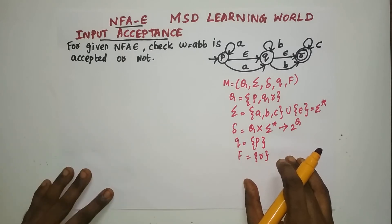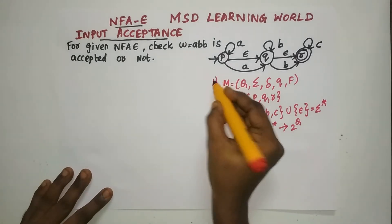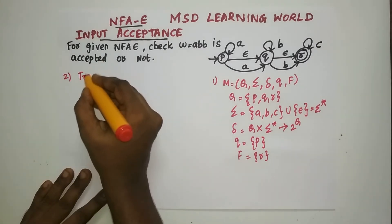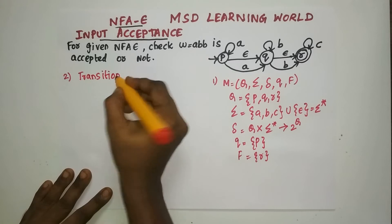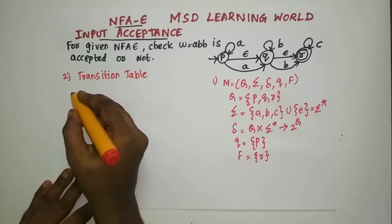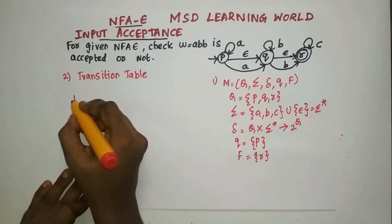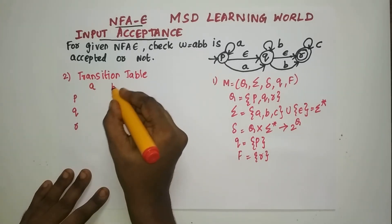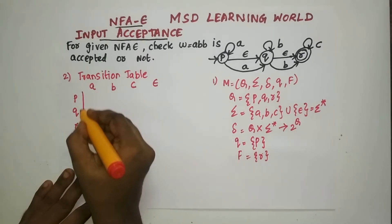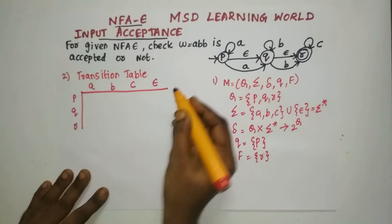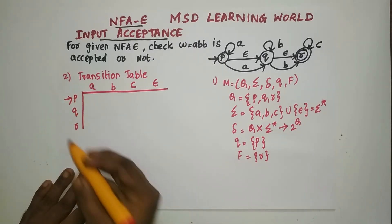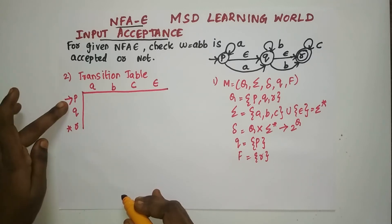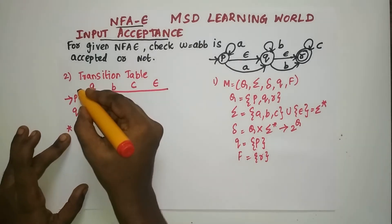Now we have to make a transition table, so writing the machine components is the initial step. Step number 2 is the transition table. When making the transition table, you have to put all the states on the vertical side — P, Q, and R — and all the inputs on the horizontal side along with epsilon. You must mark which is the initial state and which is the final state.